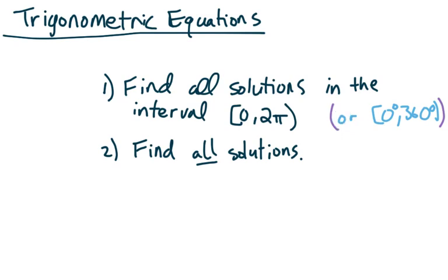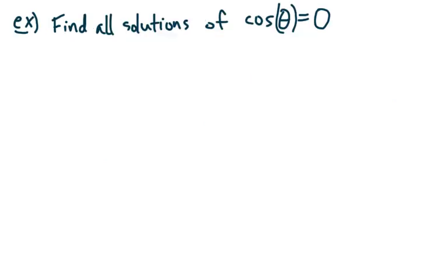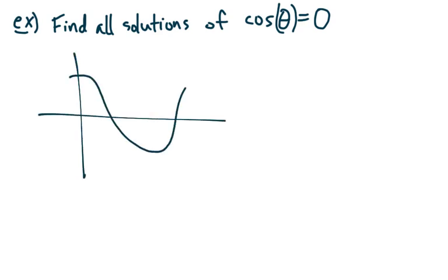Let's take a look at our first example: find all solutions of cosine theta equals zero — find all the angles theta for which cosine is equal to zero. We start by finding where cosine equals zero between zero and two pi. Now if you remember the graph of cosine, it looks like this. We had a couple of really important points. Of course, when it starts over, back up at the top, it's two pi.